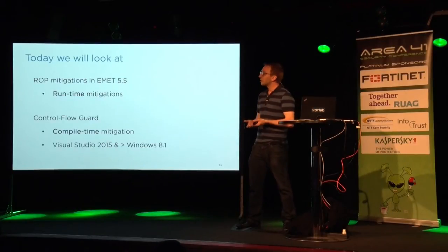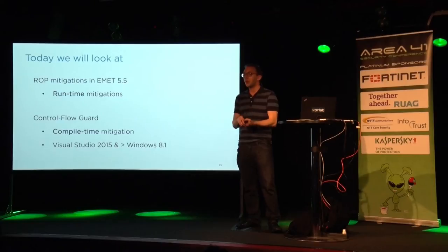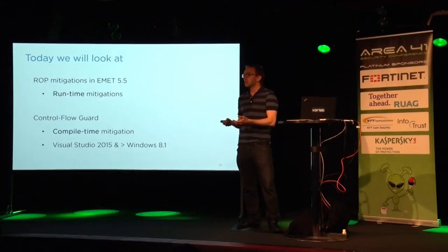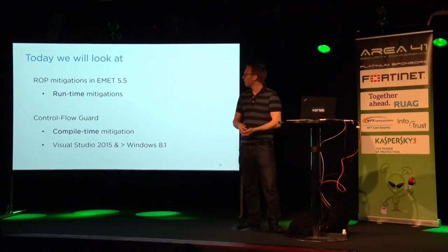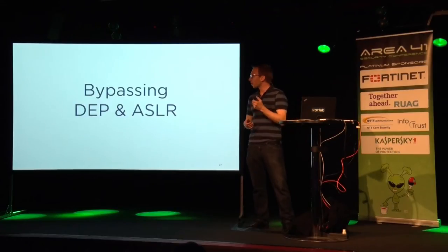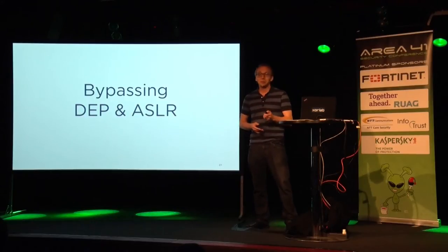Such mitigations to raise costs include EMET ROP mitigations, which are runtime mitigations — you deploy these into arbitrary Windows processes. The second mitigation is Control Flow Guard, a compile-time mitigation compiled into your program and checked at runtime, which requires more or less recent Windows versions. But before we start, let me give a quick refresher on data execution prevention and address space layout randomization, and how an attacker can bypass these.